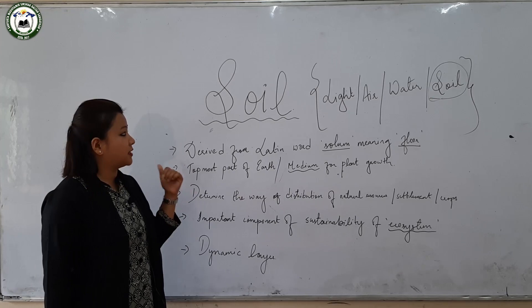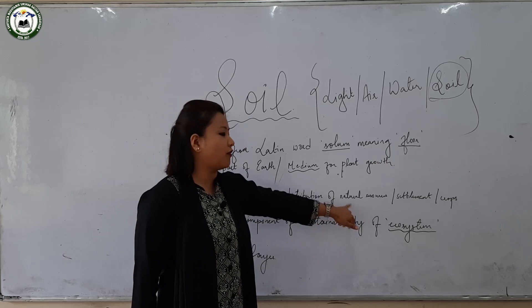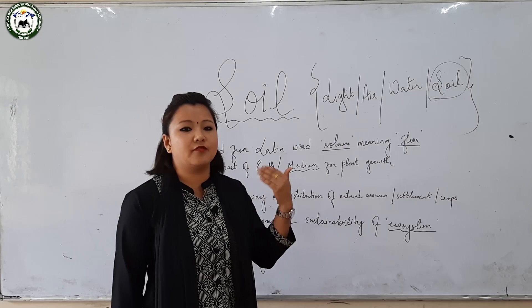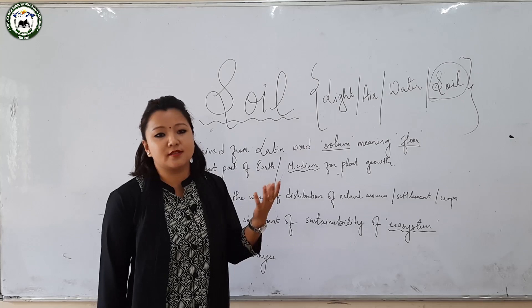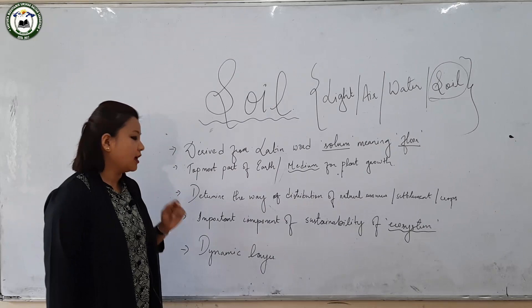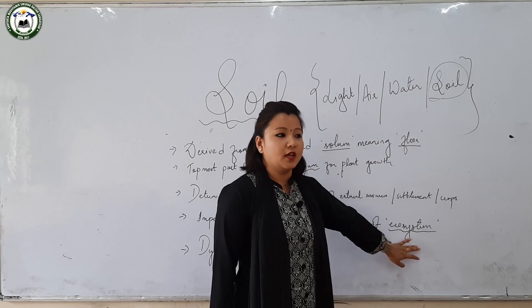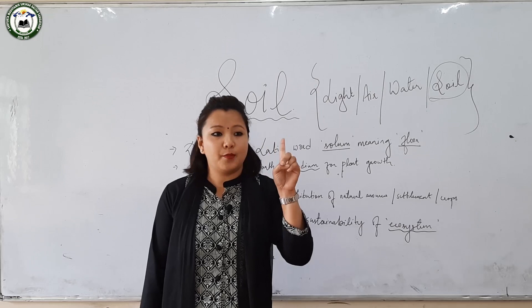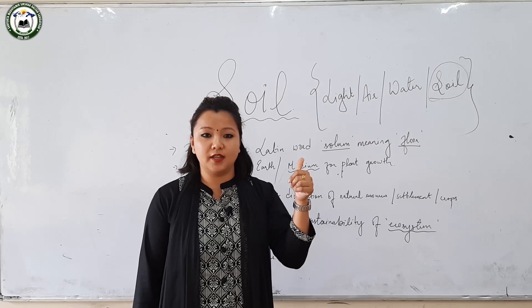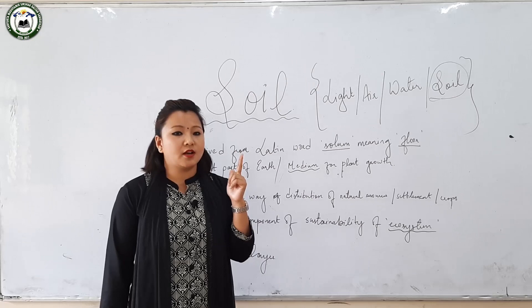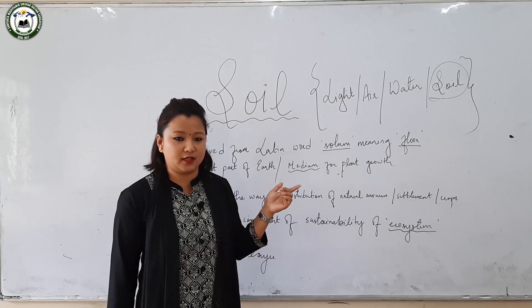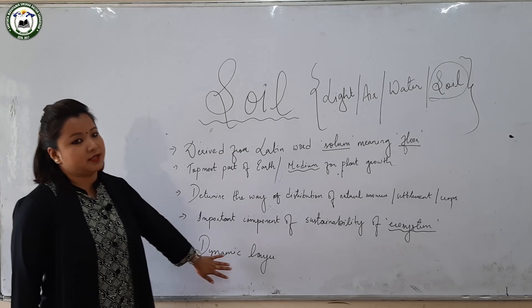Soil determines the distribution of natural resources, the natural environment, settlements, crops, and agricultural patterns over a territory or landscape. Soil is also an important component of the sustainability of the ecosystem. In the ecosystem, we have two major components: biotic components and abiotic components, regarded as living and non-living components. These biotic and abiotic components depend upon the soil directly or indirectly.